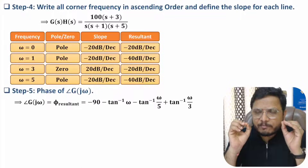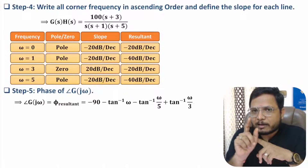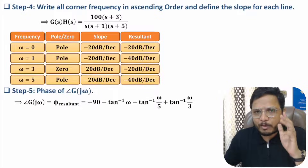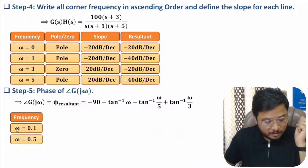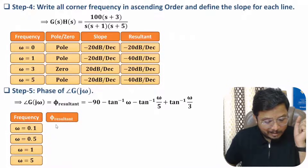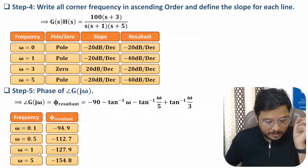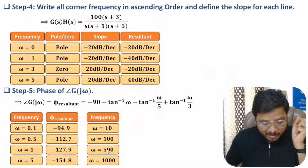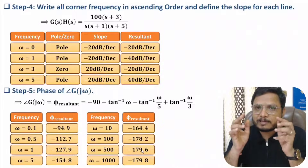To make the phase table you randomly select frequencies — you should identify at least eight to ten points. For example, consider ω = 0.1, 0.5, 1, 5, 10, 100, 500, and 1000 rad/s. Using a calculator, compute the phase at each frequency. The calculated phase values for these frequencies are listed in the table — you can verify these with your own calculator.